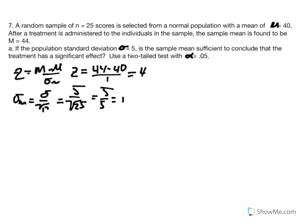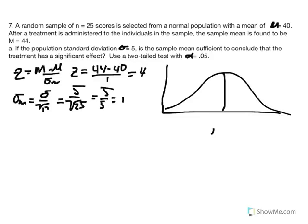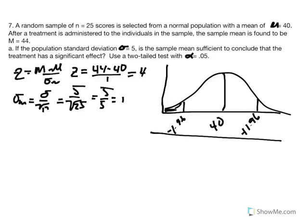So z equals 44 minus 40 divided by 1, giving a very large z-score equal to 4. Our distribution has mean 40 (z=0), critical region at ±1.96. Our sample mean of 44 is equivalent to a z-score of 4 — way out in the critical region.